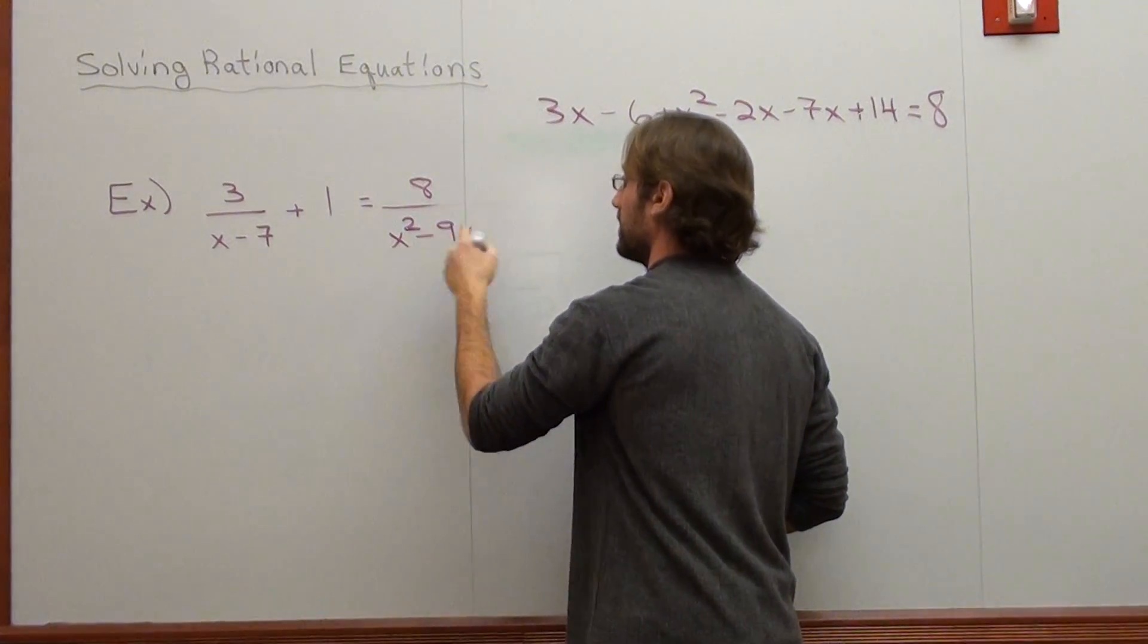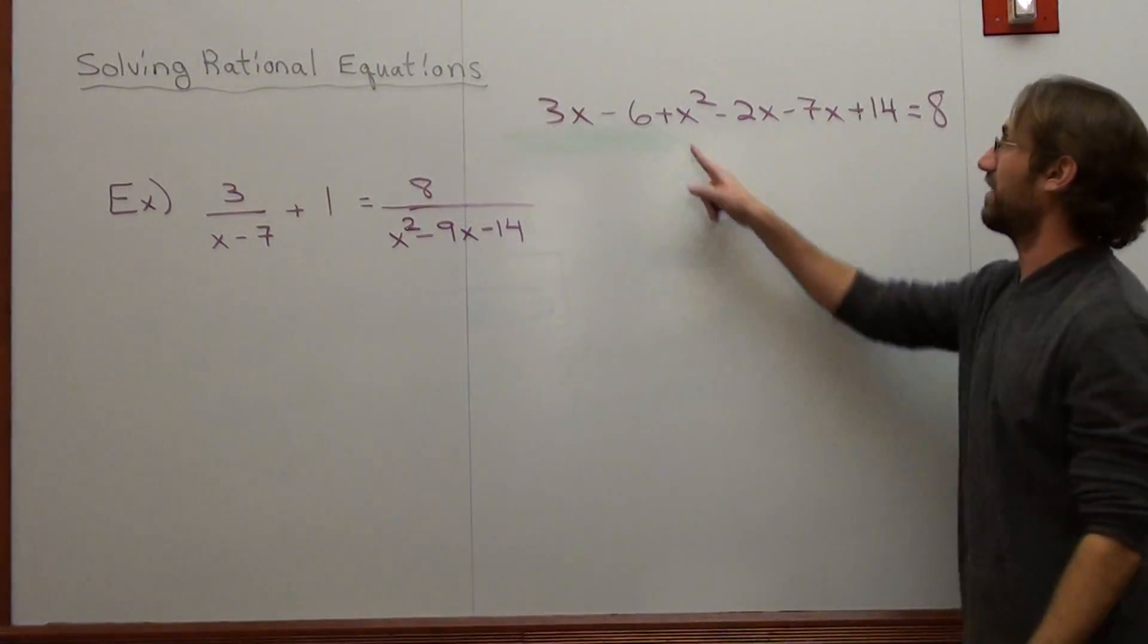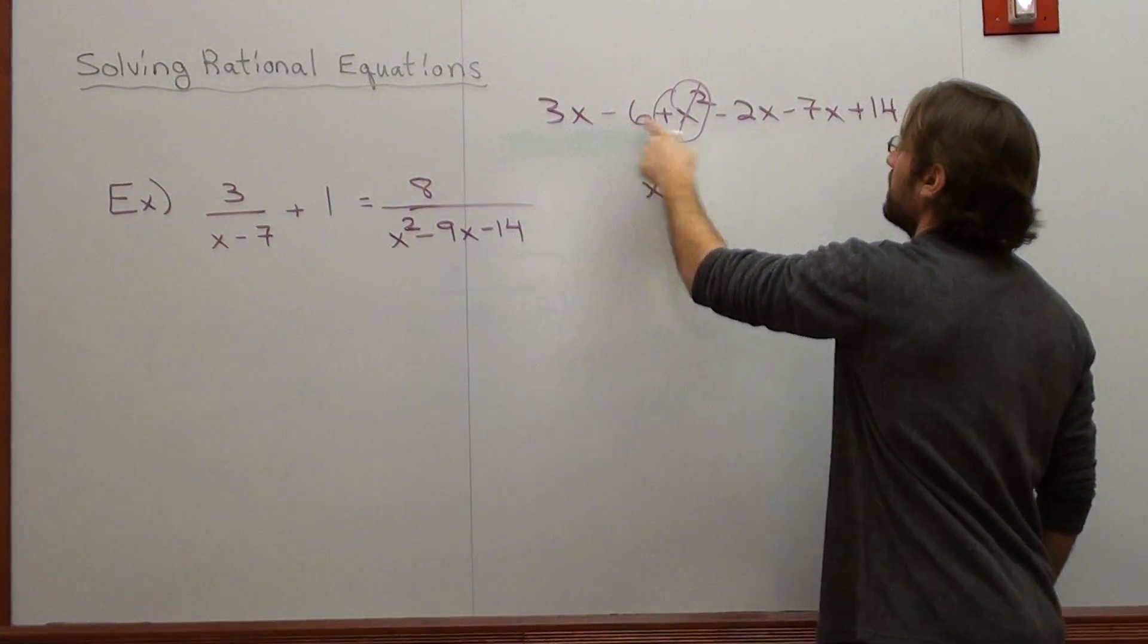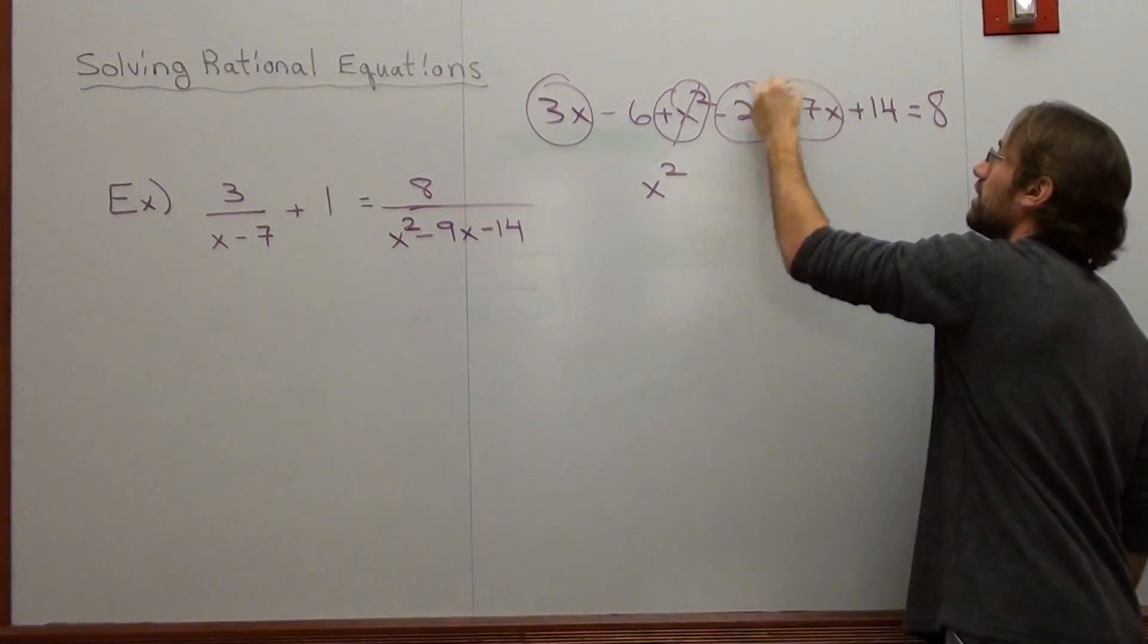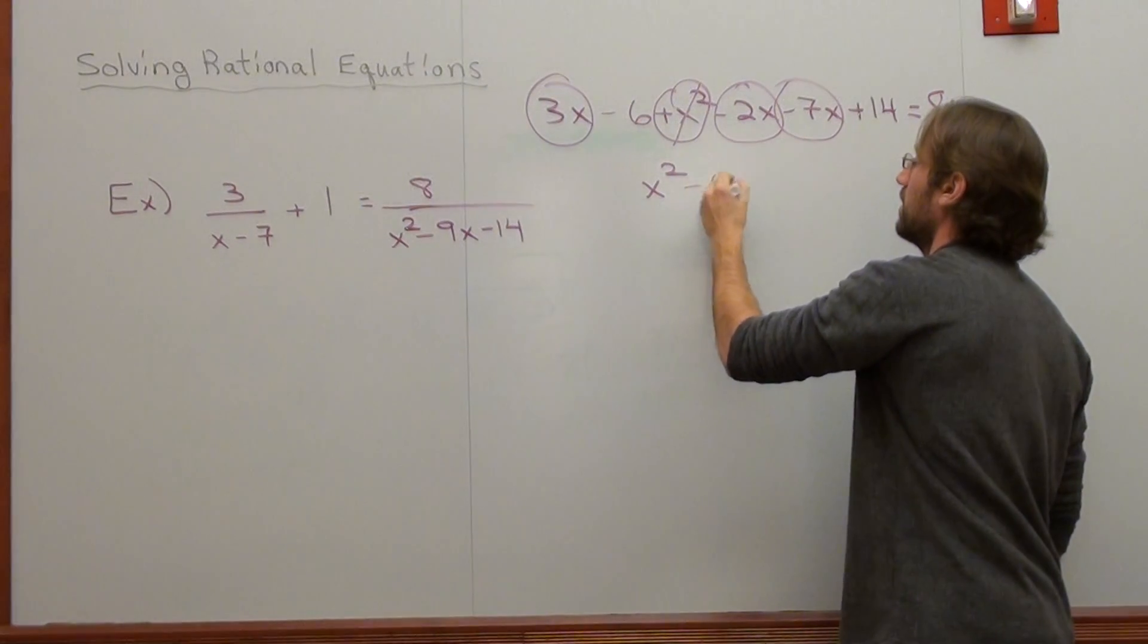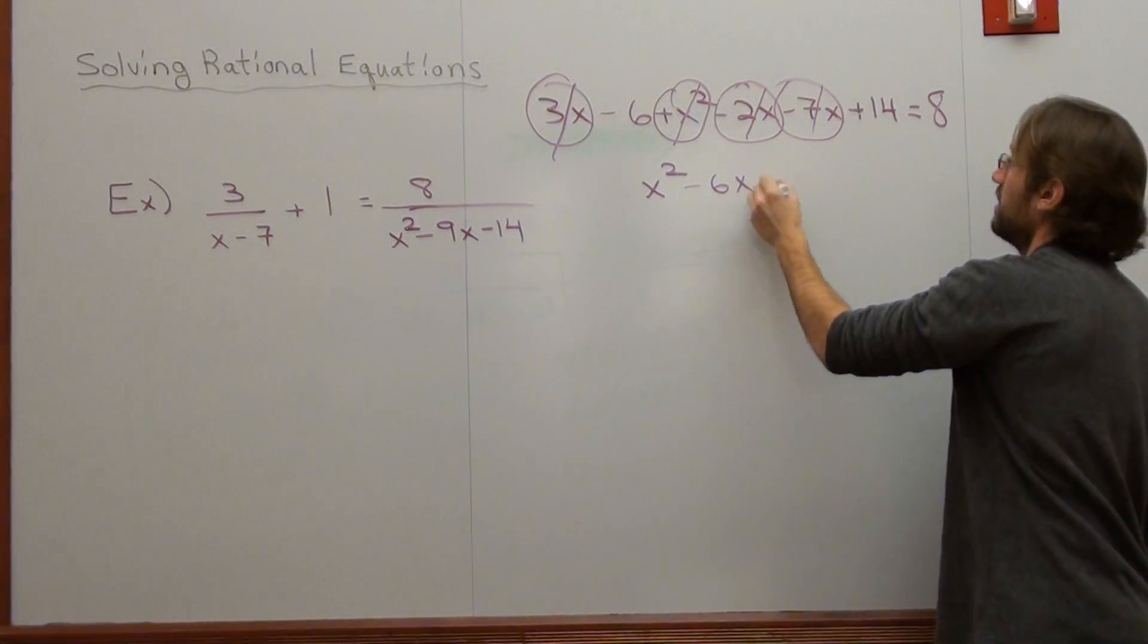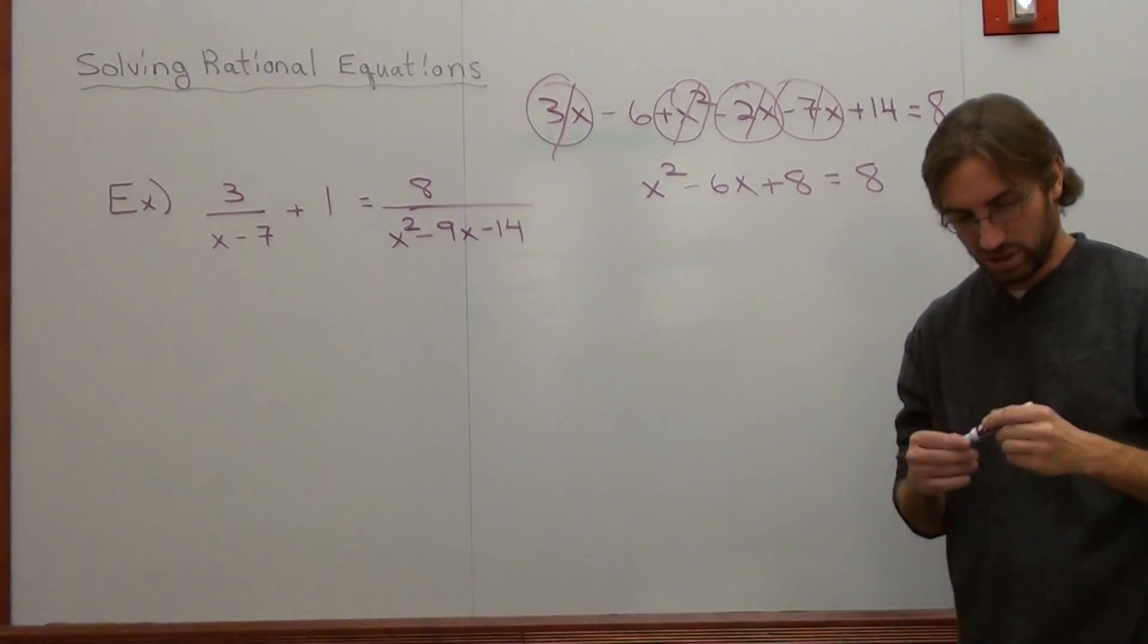I'm going to leave the original problem up. Add like terms. I've got an x squared. 3x minus 2x minus 7x. That's 1x. That's negative 6x. Negative 6 plus 14 is 8. 8, yeah, it's 8, equals 8. So far so good.